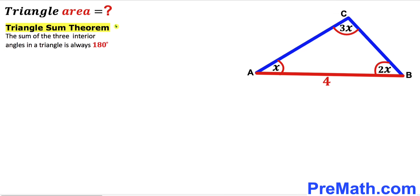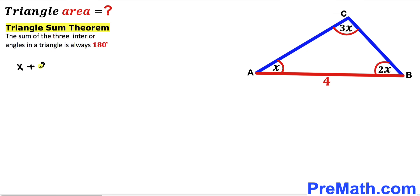Let's recall the triangle sum theorem. According to this theorem, the sum of three interior angles in a triangle is always equal to 180 degrees. So therefore the sum of all three interior angles must be equal to 180 degrees. I can write: angle x plus angle 2x plus angle 3x equals 180 degrees. Combining like terms on the left-hand side gives us 6x equals 180 degrees.